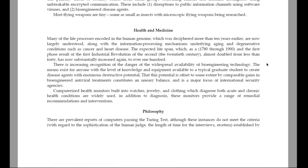Health and medicine. Many of the life processes encoded in the human genome, which was deciphered more than ten years earlier, are now largely understood, along with the information processing mechanisms underlying aging and degenerative conditions such as cancer and heart disease. The expected lifespan, which through 1900 had as a first result of the industrial revolution almost doubled from less than 40, has now substantially increased again to over 100. There is increasing recognition of the danger of the widespread availability of bioengineering technology. The means exist for anyone with the level of knowledge and equipment available to a typical graduate student to create disease agents with enormous destructive potential.